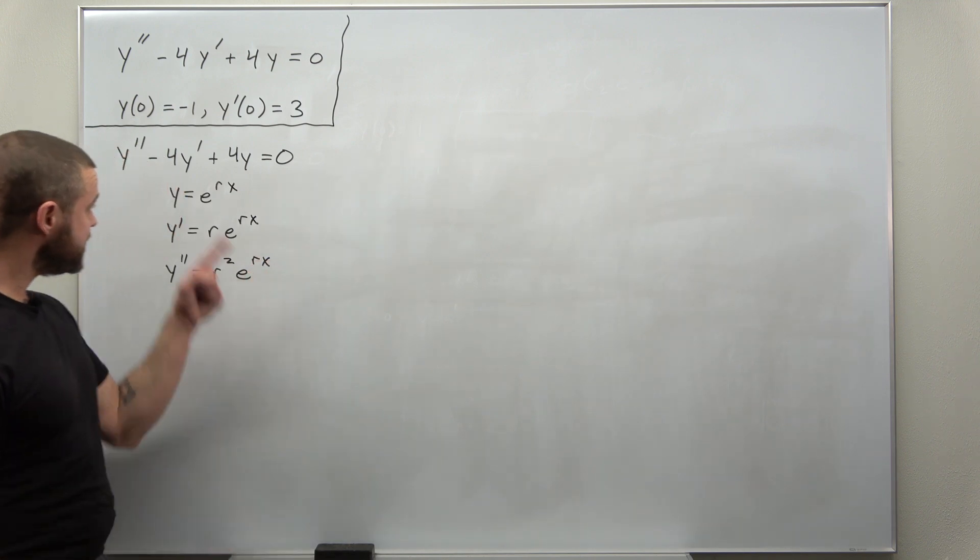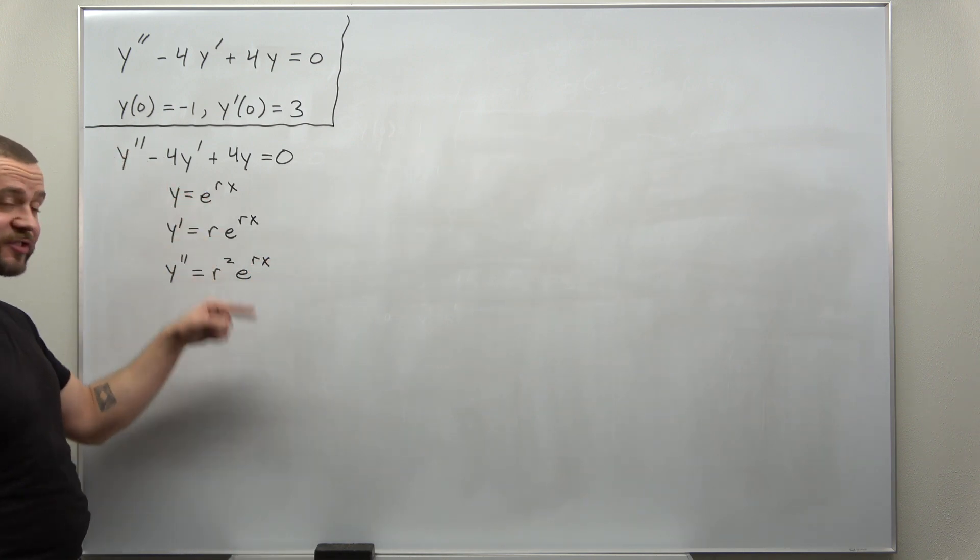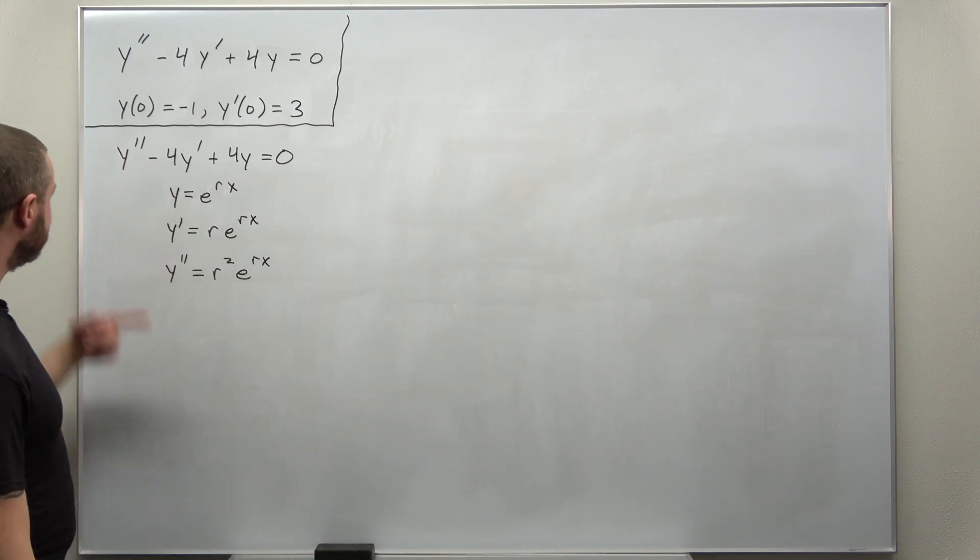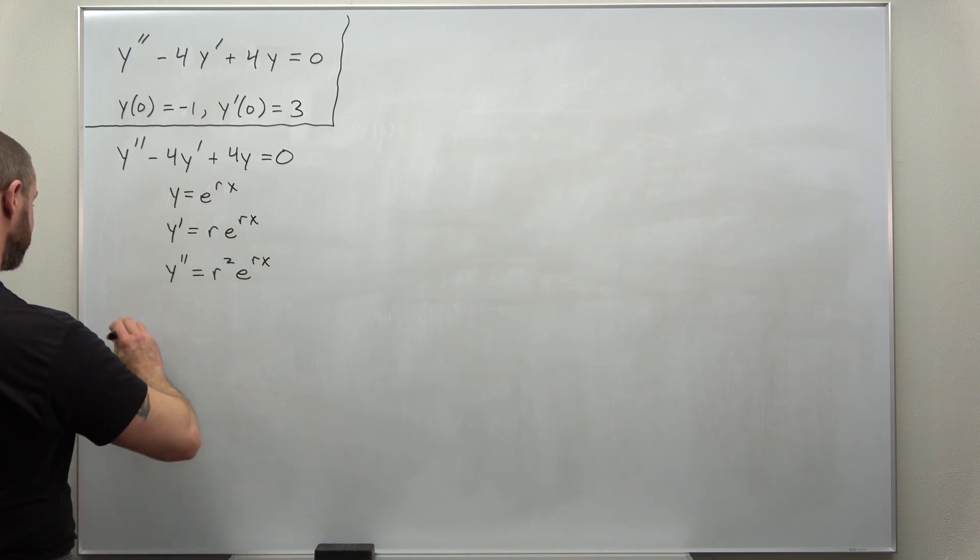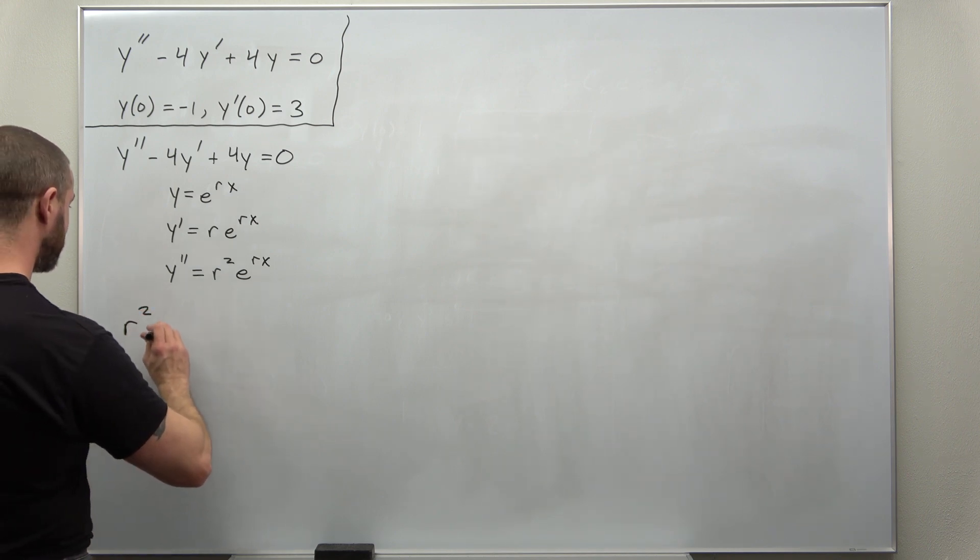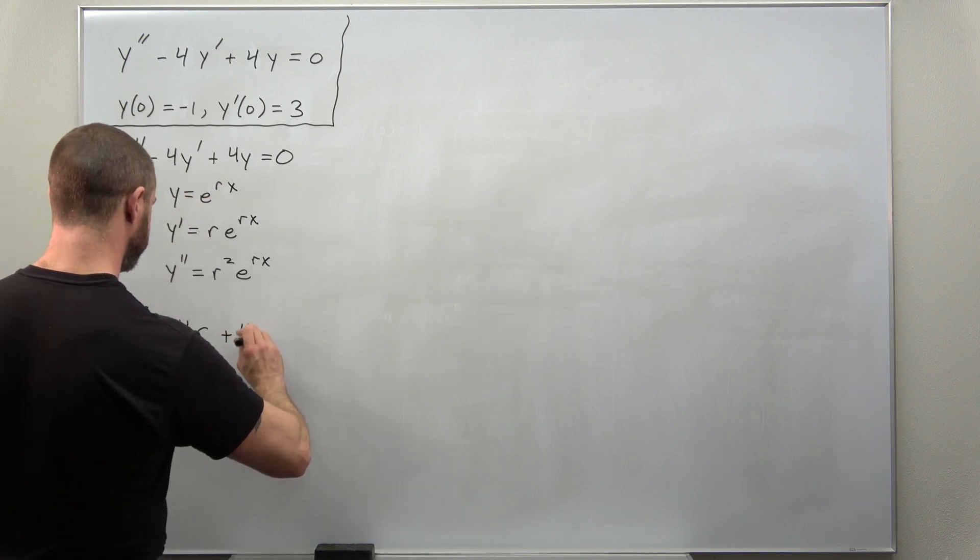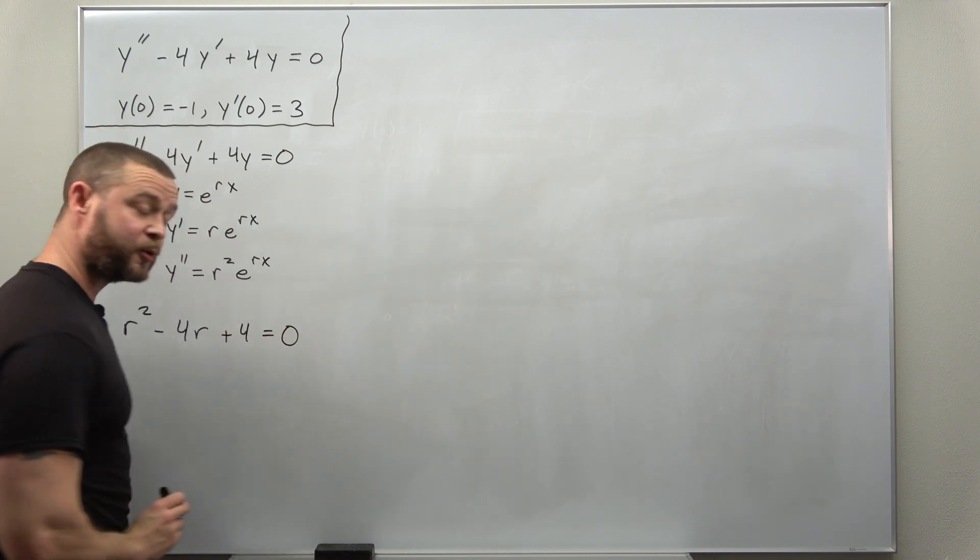We always know each term contains e to the rx so we can leave that off since we're gonna factor it out anyway, and if we plug this in we get as our characteristic equation r squared minus 4r plus 4 equals 0.